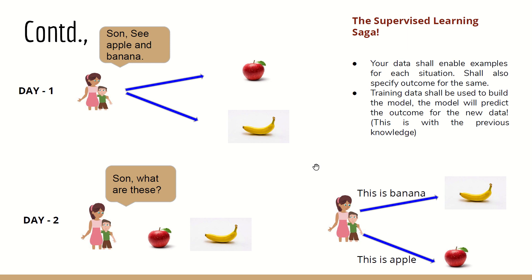This is called supervised learning: your data provides examples for each situation and specifies the outcome. You train the system with all situations it will face and define what output to produce. Apple and banana images are trained — next time the same situation arises, the system gives a clear result. The training data is very important; the system behaves in the future based entirely on whatever training you have given.